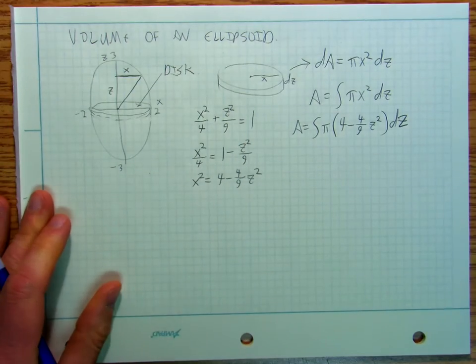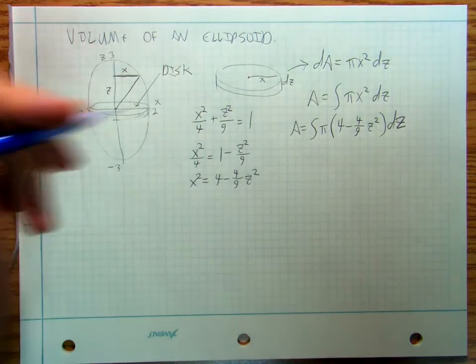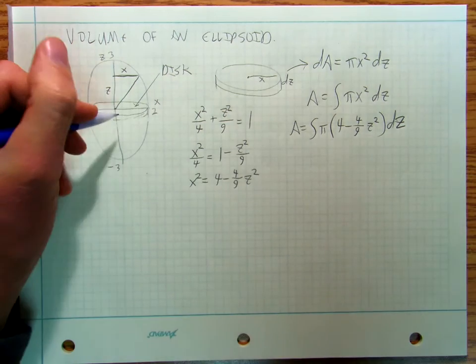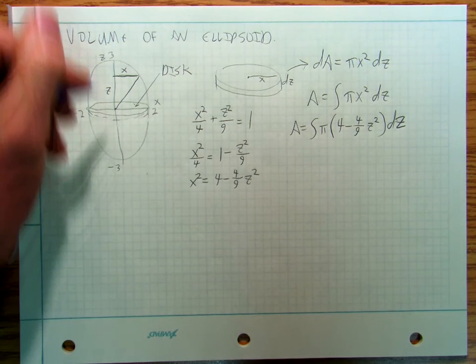And then I add that on there. And I'm going to go from negative 3 to 3.